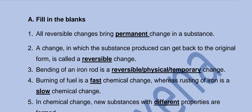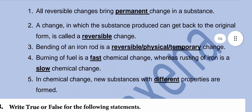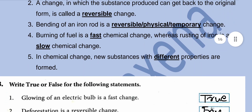Bending of an iron rod is a reversible, physical, temporary change. Burning of fuel is a fast chemical change, whereas rusting of iron is a slow chemical change. In a chemical change, new substances with different properties are formed.